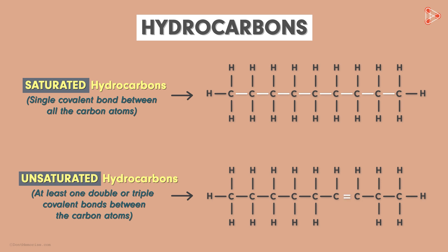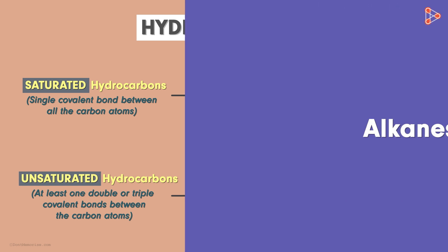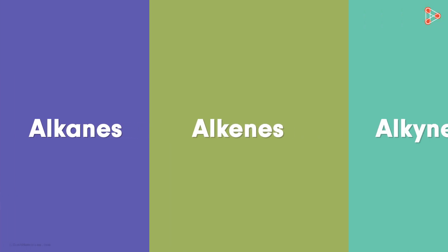Now in order to simplify our understanding and to study these hydrocarbons in detail, we divide these into three major categories. These are called the alkanes, alkenes and the alkynes. Let's understand each type in detail.